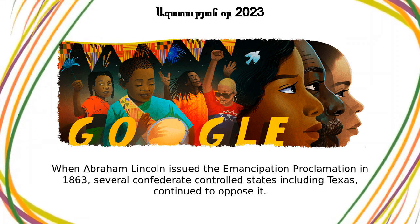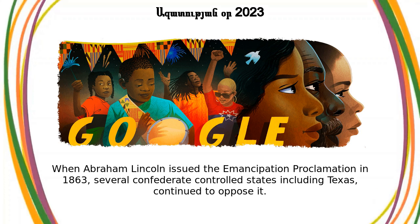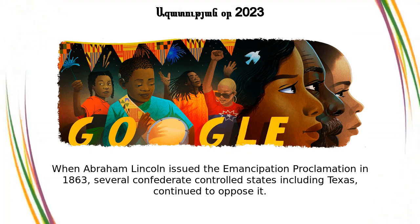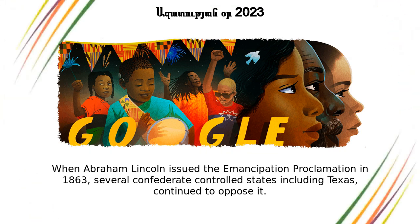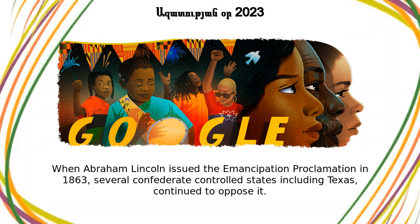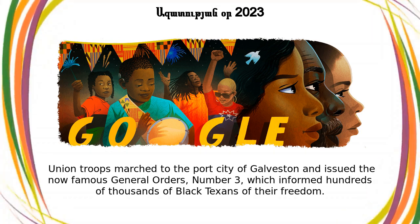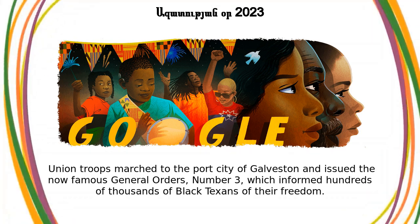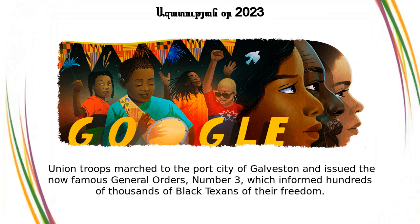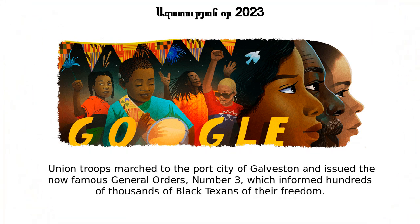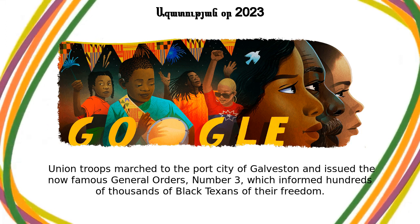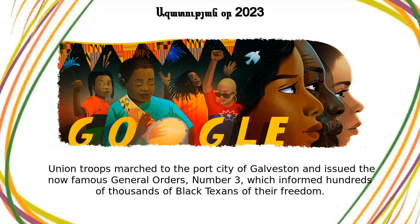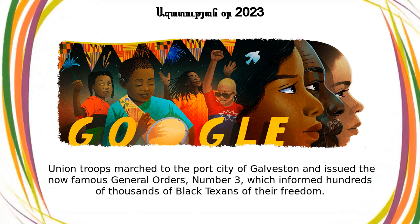When Abraham Lincoln issued the Emancipation Proclamation in 1863, several Confederate-controlled states including Texas continued to oppose it. Union troops marched to the port city of Galveston and issued the now-famous General Orders, No. 3, which informed hundreds of thousands of Black Texans of their freedom.